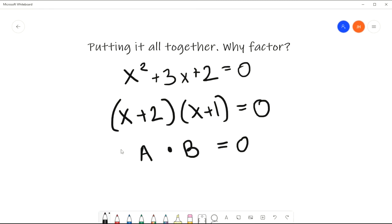Earlier, we just showed that A times B equaling 0 implies that A equals 0 or B equals 0. So by the same exact logic, I should be able to claim that if I have x plus 2 times x plus 1 equals 0, it is true that x plus 2 equals 0 or x plus 1 equals 0.